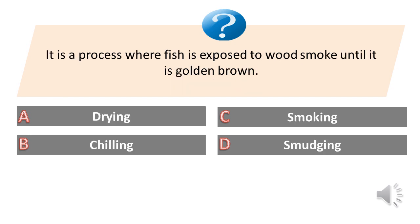It is a process where fish is exposed to wood smoke until it is golden brown. A. Drying. B. Chilling. C. Smoking. D. Smudging. The answer is C. Smoking.